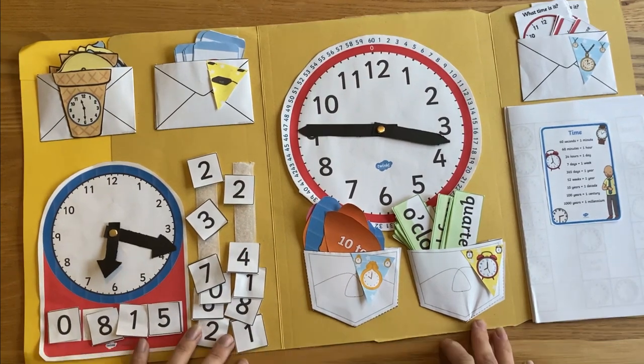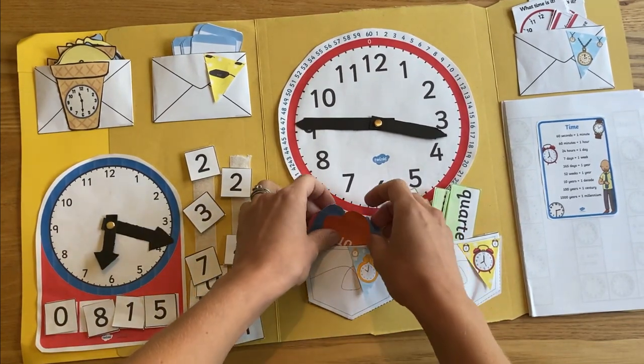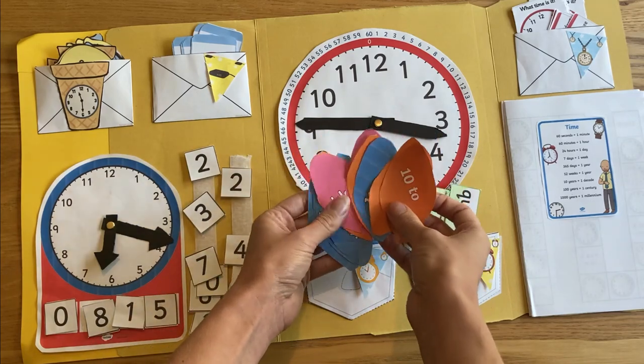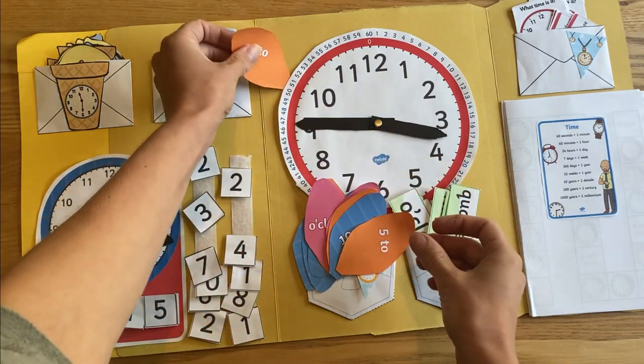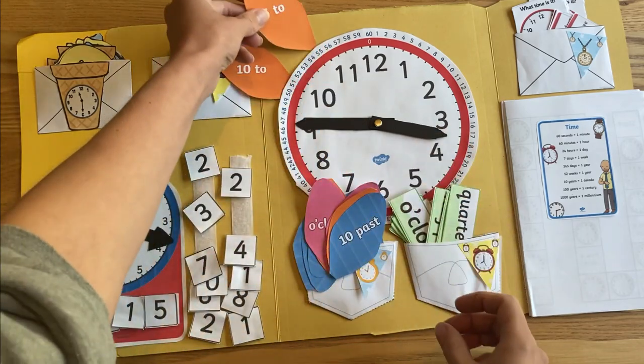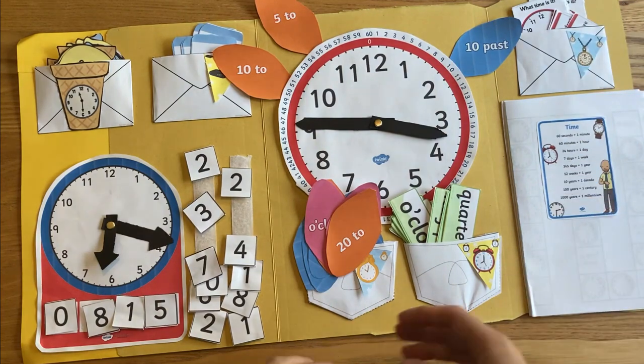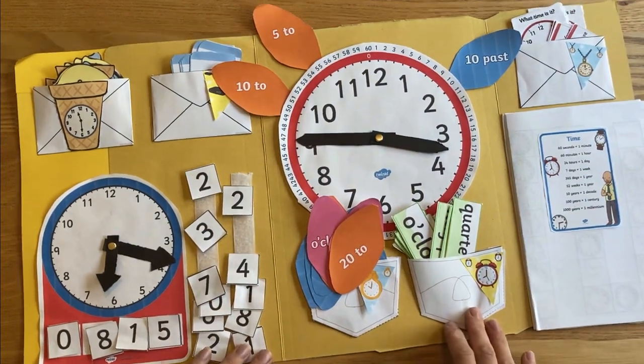We've printed off some other resources on Twinkle where we've got some petals to put around our clock so we can practice putting on where 10 to is and where 5 to is and filling up the petals of our clock.